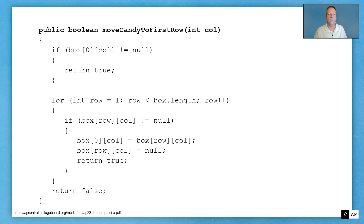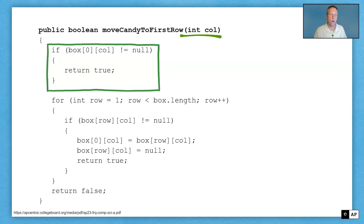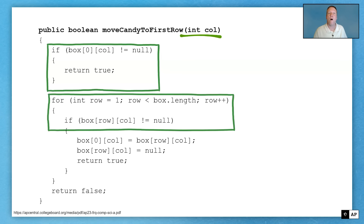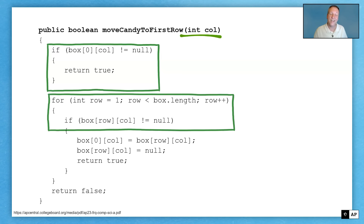Here's the canonical solution. We have the parameter col — the column we're focusing on. First, we look at row zero: if box[0][col] is not null, meaning there's already a piece of candy there, we return true immediately. If it is null, we continue. Now we loop through all rows in that column, starting at row one, while row is less than box.length, incrementing row. We start at row one since we already know row zero is null — though starting at row zero would cause no harm.